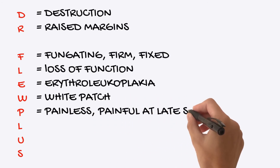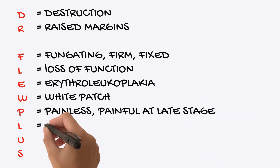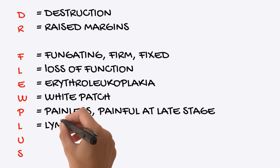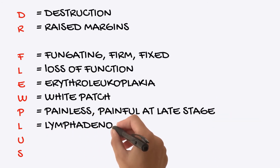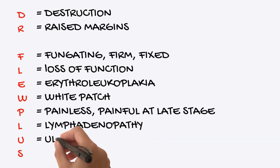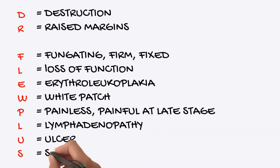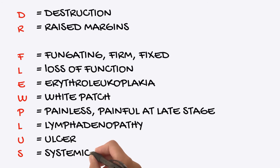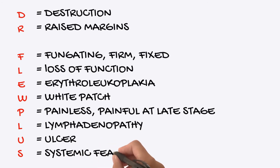Continuing the Dr. Flu Plus mnemonic: L — you can have lymphadenopathy; your lymph nodes can become enlarged, rubbery, fixed, and painless. U — it is a non-healing ulcer. S — you can get systemic features such as cachexia, weight loss, and B symptoms. That is the mnemonic to help you remember the clinical presentations of an oral tumour.